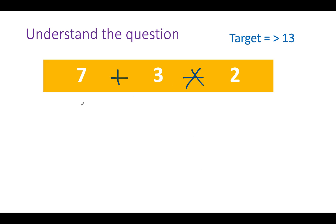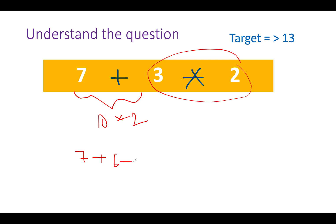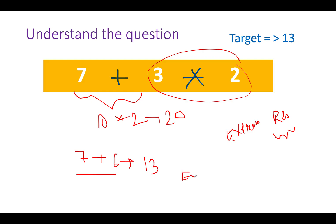Consider evaluating 1+3×2. You cannot evaluate 1+3 first to get 4 and then multiply by 2 — that gives the wrong result of 8. Instead, you need to evaluate 3×2=6 first, giving 1+6=7. So to handle these cases correctly, instead of just tracking the running result, we need additional values passed in the recursive tree.